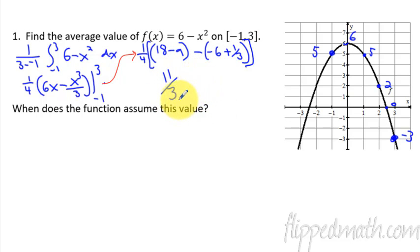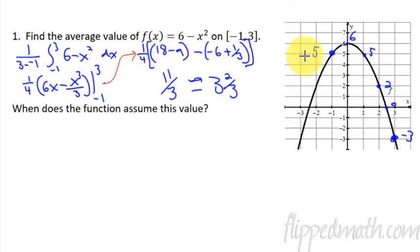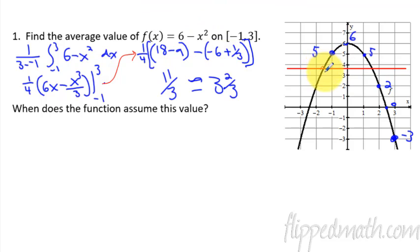After distributing the one-fourth and simplifying, I get eleven-thirds, which is the same as three and two-thirds. So the average y-value on this interval is three and two-thirds. Drawing a horizontal line at that height, you can see the function hits that value in two places within our view.